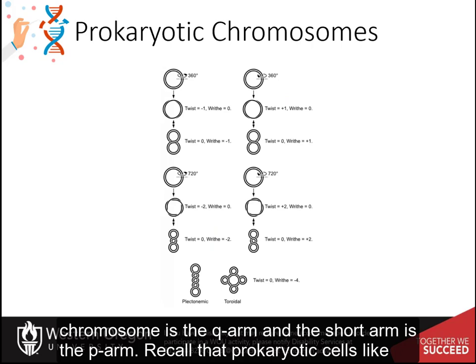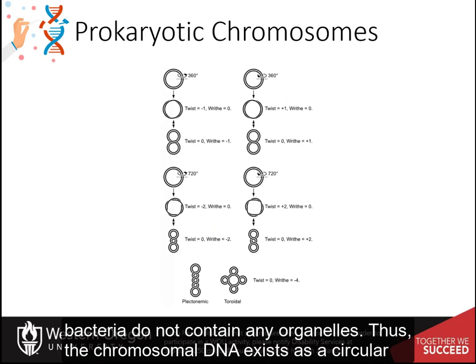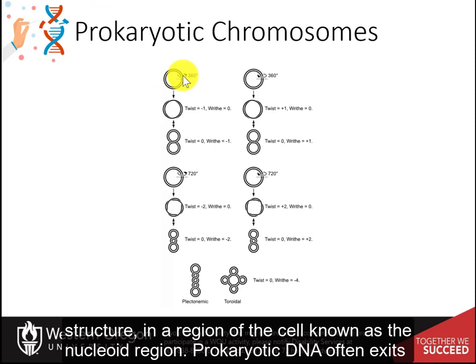Recall that prokaryotic cells like bacteria do not contain any organelles. Thus, the chromosomal DNA exists as a circular structure in a region of the cell known as the nucleoid region.